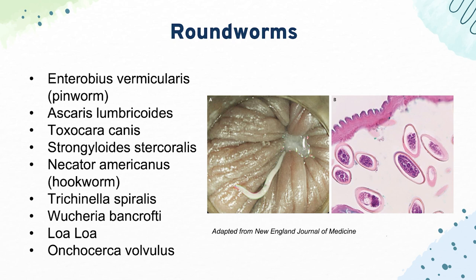Our roundworms include Enterobius vermicularis, also called pinworm, which causes anal pruritus — eggs are visible on the scotch tape test. Then Ascaris lumbricoides, which causes obstruction at the ileocecal valve because the worm can get quite large. They can also travel to the alveoli and cause Loeffler syndrome, a pulmonary eosinophilia. Toxocara canis is transmitted via fecal-oral route, causes visceral larva migrans, and can affect multiple organs.